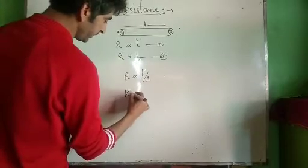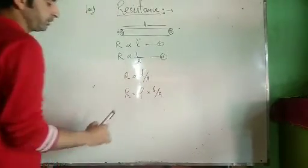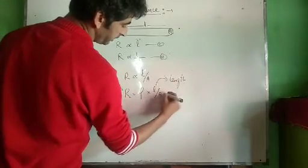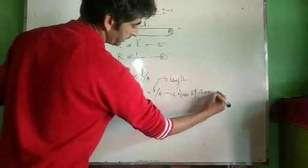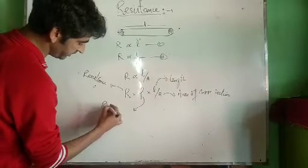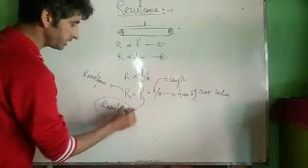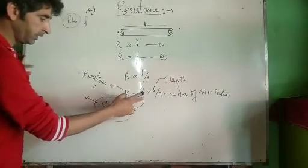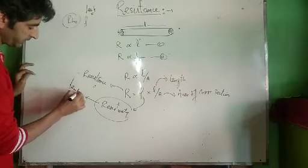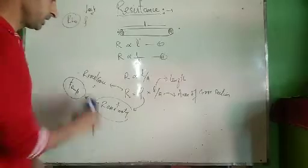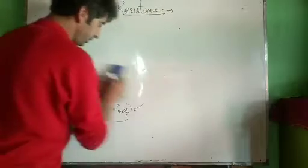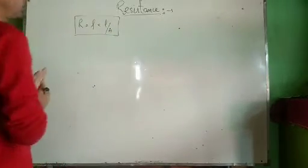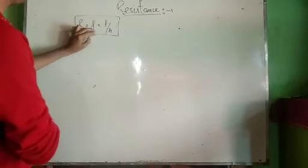Combining both proportionalities, R is directly proportional to L by A. Removing the proportionality sign, we introduce a constant rho (ρ), giving us R = ρL/A. Here R is resistance, L is the length of the conductor, A is the area of cross-section, and ρ is called resistivity. Resistivity depends only upon the nature of the metal and temperature — it does not depend upon length or area of cross-section.